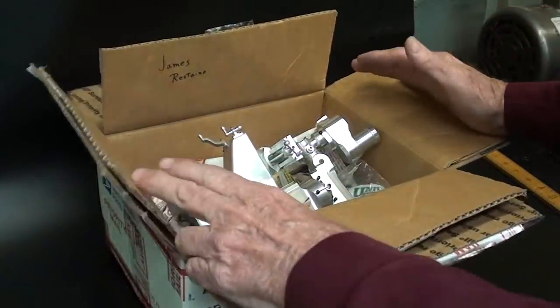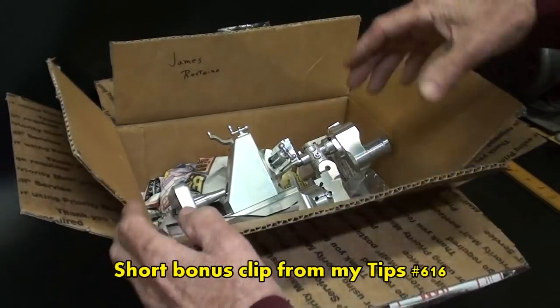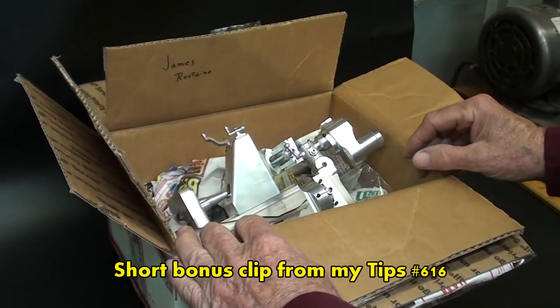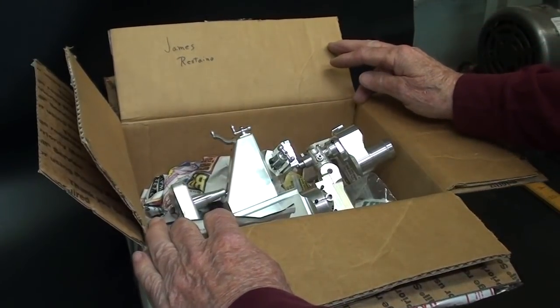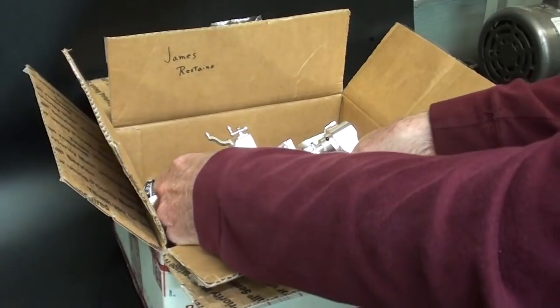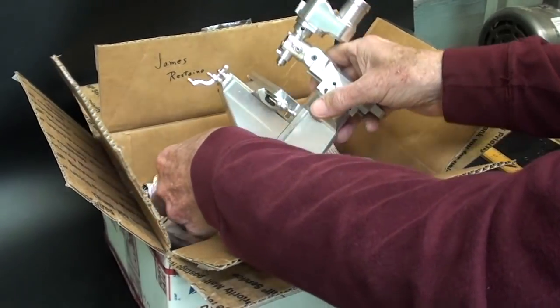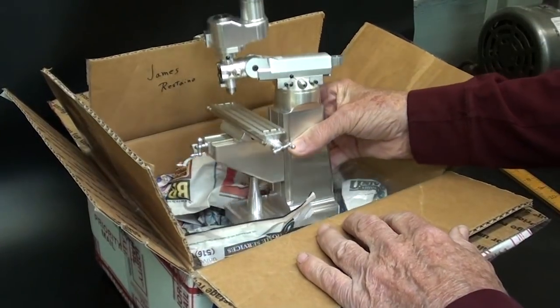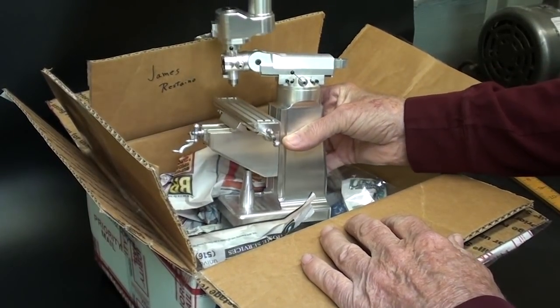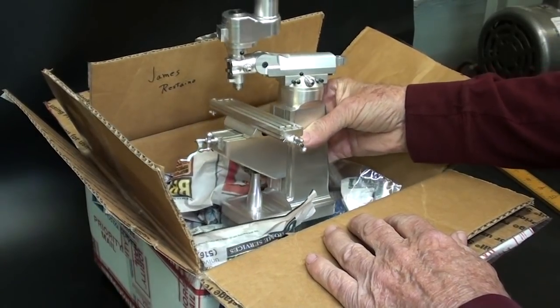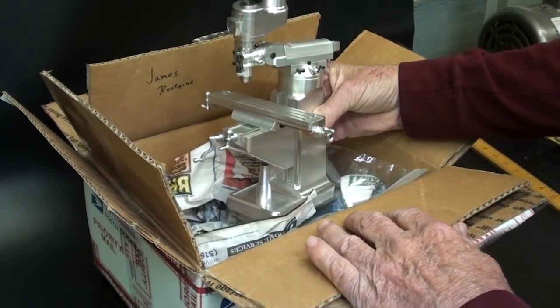But here it is. It was all bubble wrap, but that's been removed. And notice the double box cost $22 to ship it. And it's from James Restano in the great state of New York. Well, when I opened it up, there was a letter in it, which I'm not going to read to you, giving an explanation. But here it is, a model of a Bridgeport milling machine in aluminum.